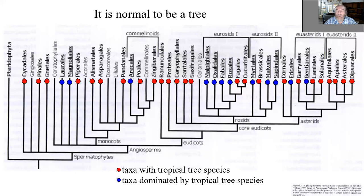It's typical, it's normal to be a tree in the tropical flora. This is the high-level phylogeny where the lineages — orders in this case — containing tropical tree species are in red, and those dominated by tropical tree species are in blue. There are very few lineages which actually don't work this way.